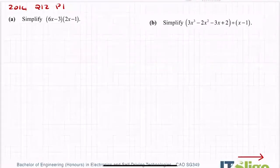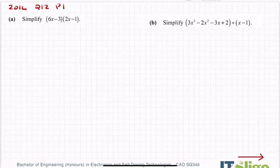Let's have a look at the 2014 question on algebra, question 12 on paper one. So simplify — the first part was multiplying: simplify 6x minus 3 by 2x minus 1.